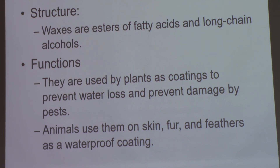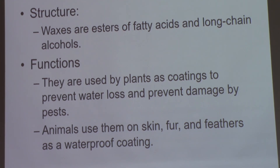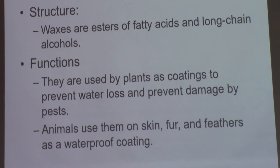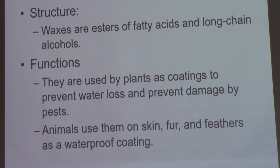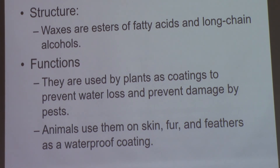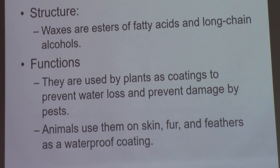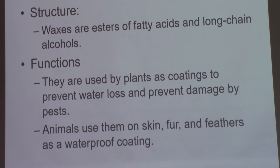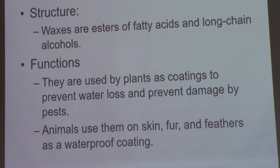Some plants use waxes to prevent water from leaving. Desert succulents like cacti have hard, wax-covered leaves. The wax keeps water inside the plant — without it, the water inside would evaporate and the plant would shrivel up. When water tries to evaporate, it hits the wax layer and gets pushed back inside the leaf.